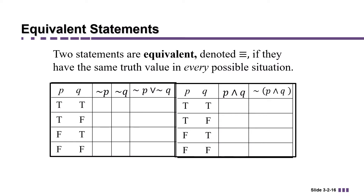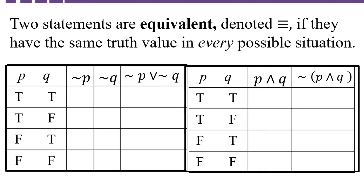Two statements are logically equivalent, which is denoted with basically an equal sign but with three bars instead of two, if they have the same truth value for every possible situation. So here I have two truth tables. In the truth table on the left, we are analyzing the statement not P or not Q. In the truth table on the right, we're analyzing the statement negation of P and Q. We'd like to know if they're logically equivalent, which we'll be able to tell when we get to the last truth value column.